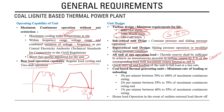Quicker startup and loading of units to full load at a very fast rate is required. The minimum rate of loading or unloading is 3 percent per minute between 70 to 100 percent of maximum continuous rating, and 2 percent per minute between 55 to 70 percent.